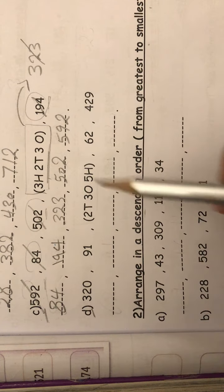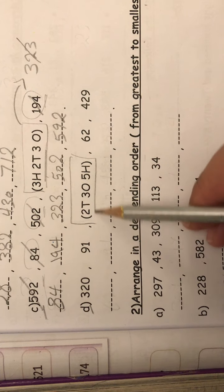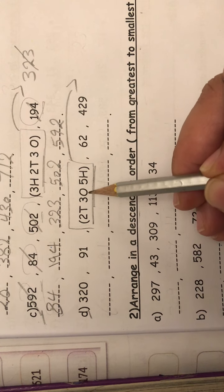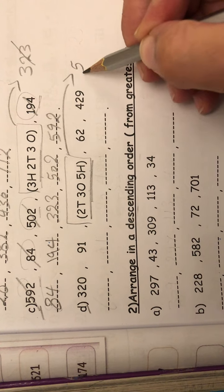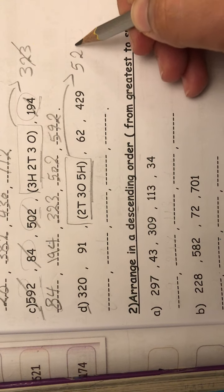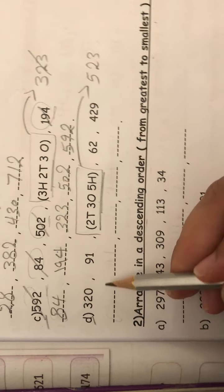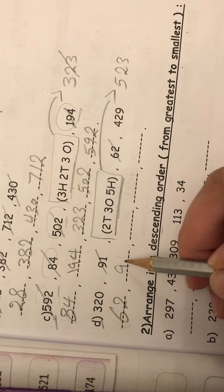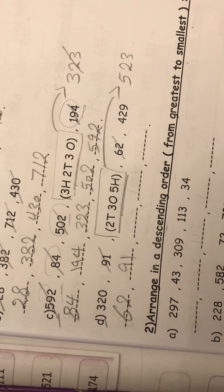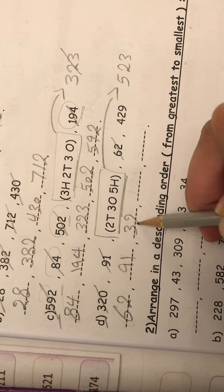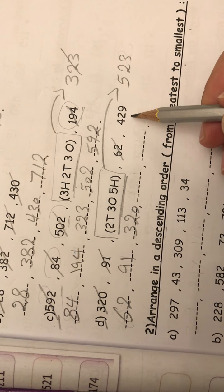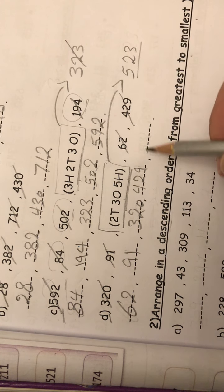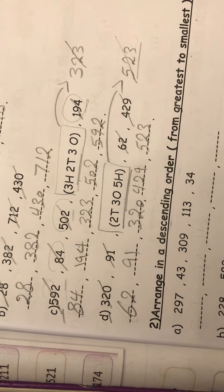Letter D. Here, it's the same. You must transfer it to standard form. So it will be 2 tens, 3 ones, 500. So it will be 523. So let's start with the smallest number, 62. What's next? 91. Excellent. Next, 320, and next, 429. And last, 523. Right?